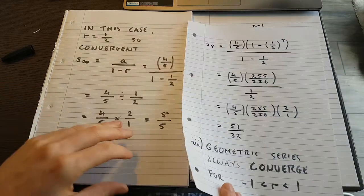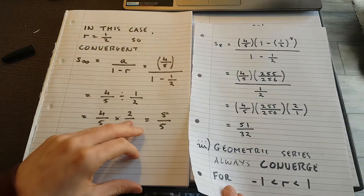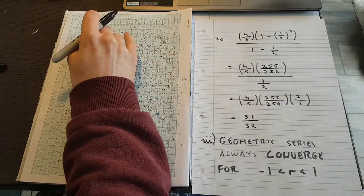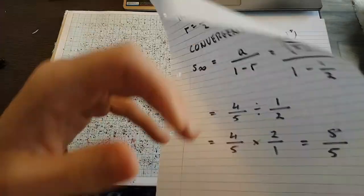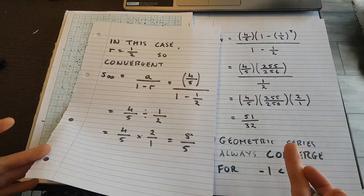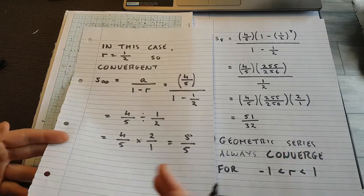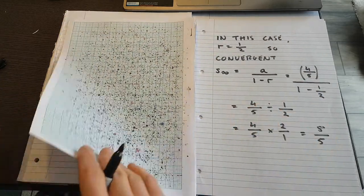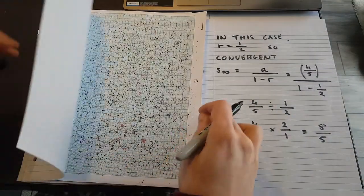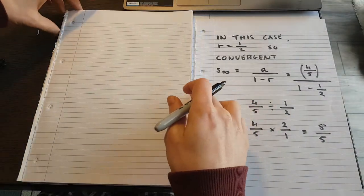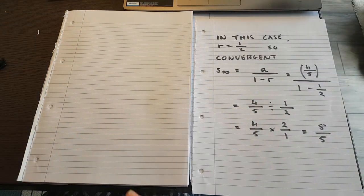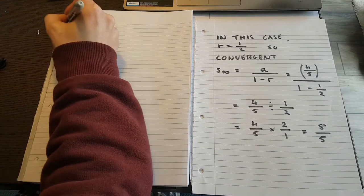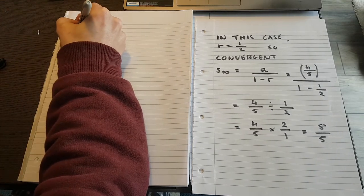That's all of part A covered. We have S∞ = 8/5. If r had been bigger than 1, we wouldn't have a convergent series and wouldn't need to find S∞. Now for part B: use the ratio test to test the following series for convergence.